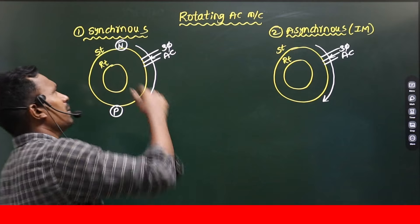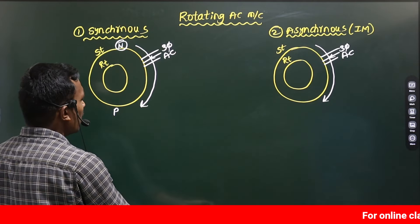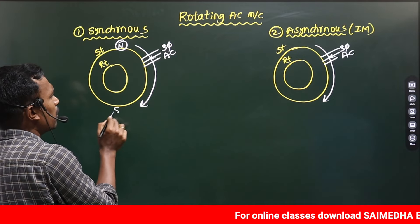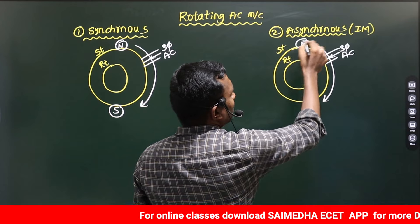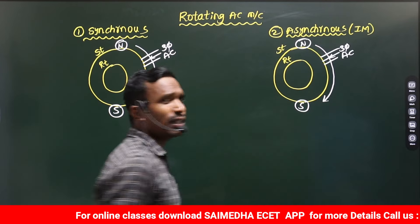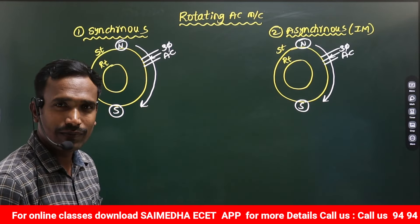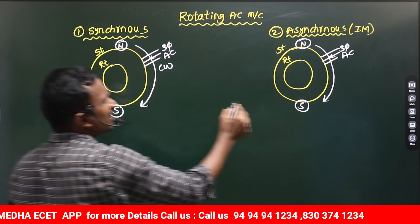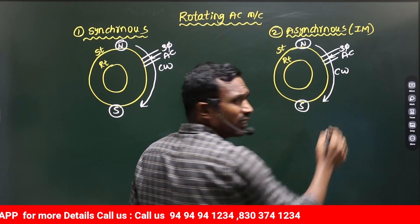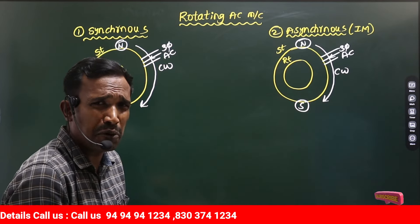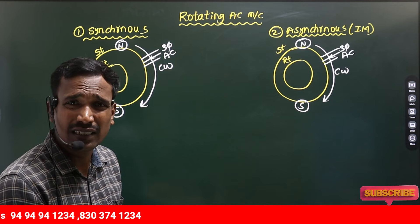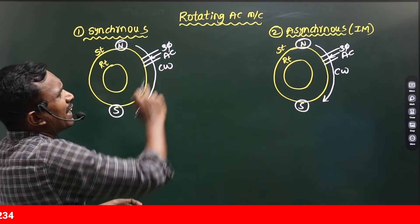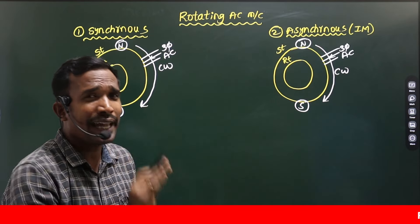For a 4-pole machine: North, South, North, South — like that. Formation of poles takes place: North pole and South pole. These poles will move in clockwise direction. These are not stationary poles. This is not a stationary magnetic field — this is a magnetic field which is rotating in clockwise direction with some speed.